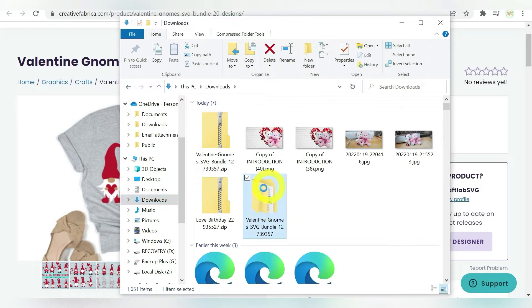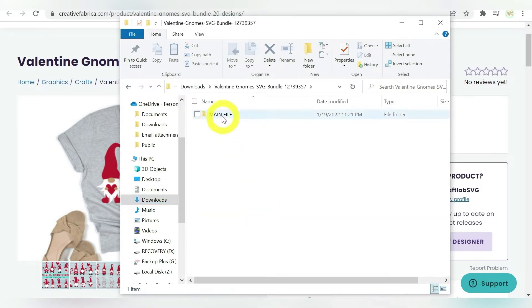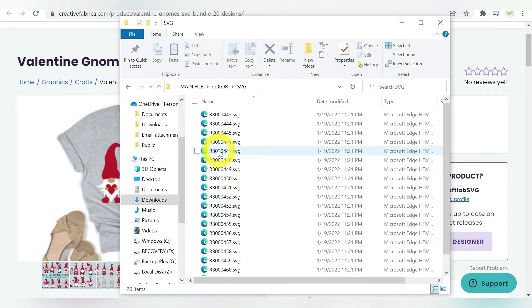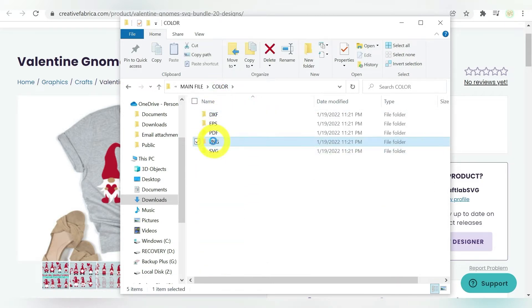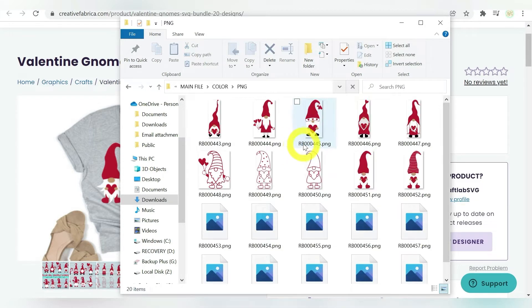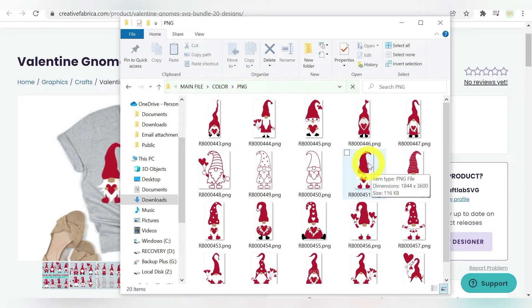So I'm going to locate my unzipped folder, which is right here. I can double click, and we'll open the main file. And I do want color gnomes, because we're going to layer. And let me show you real quick. I can open the SVG, and you'll see it just lists them out by number. So a lot of times what I'll do is take a look at the PNGs, and it'll show previews. So then I can make note of which ones I want to use.